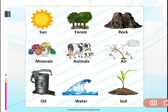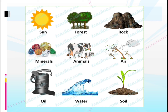Sun and air are resources you get all the time. Even though we use them, they are continuously available — the sun rises every morning and air is blowing 24 hours. But the other resources like forest, rocks, minerals, animals, oil, water, and soil — all these we have to use very carefully.